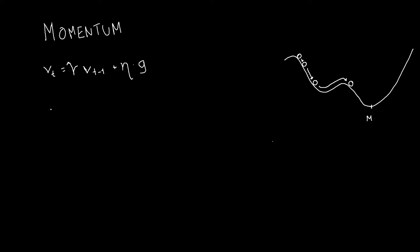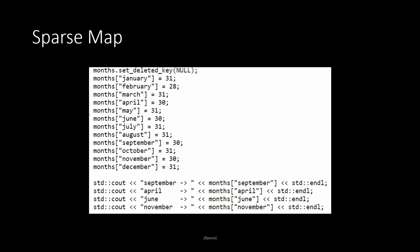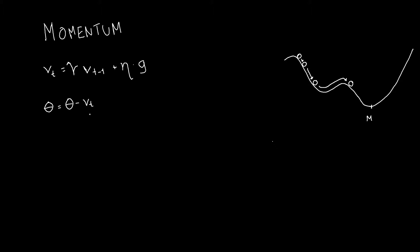That's all. And when we are updating it we will do the same: our parameter is equal to our parameter minus Vt. So this is the formula of the momentum.